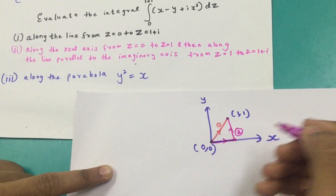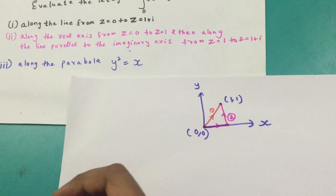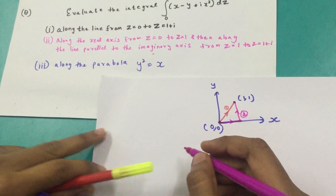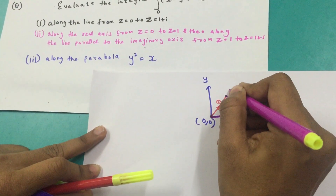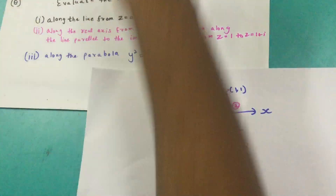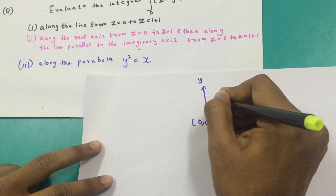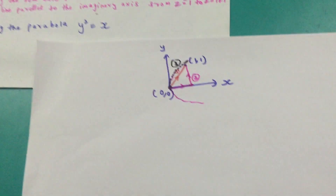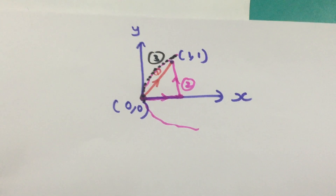My third path would be along the parabola y² = x. That parabola would look something like this. So this is my third path. Okay, so let's get started solving with the first path.